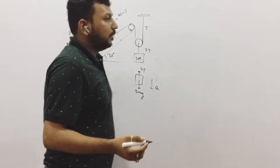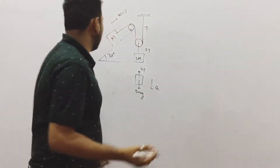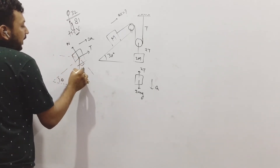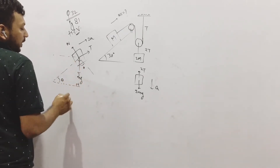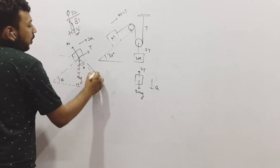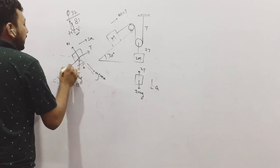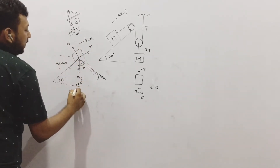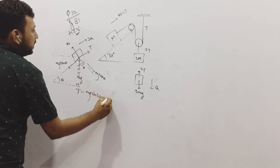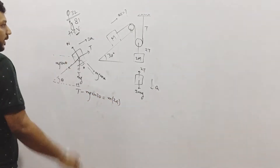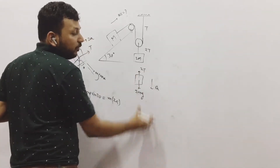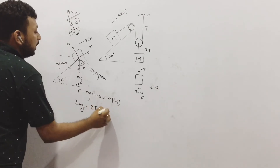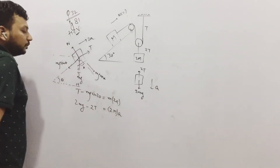If any student is finding it difficult and cannot understand, you can write in the comments. This angle is 30 degrees — you can call it theta. So this is theta, 90 minus theta, and again this is theta, because this is 90 degrees and this will also be 90 degrees. Resolving forces, you get MG sin theta along the incline and MG cos theta perpendicular. So the equation is: T minus MG sin theta equals M times 2A.